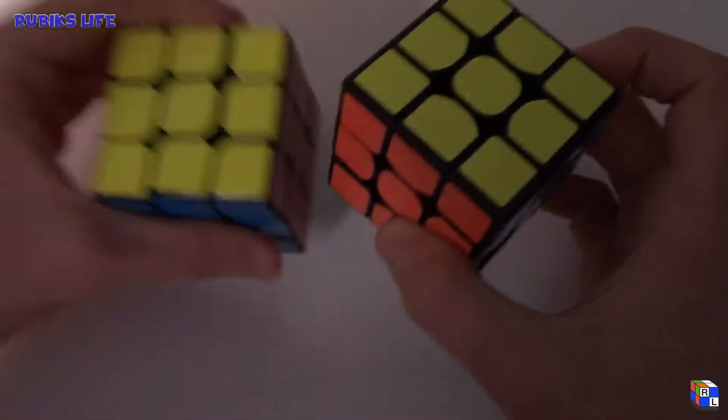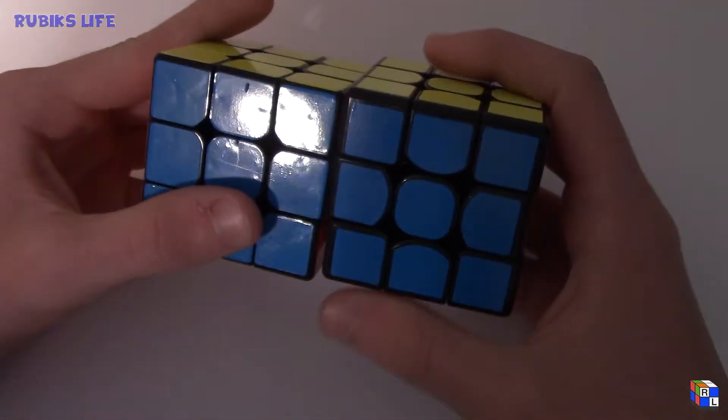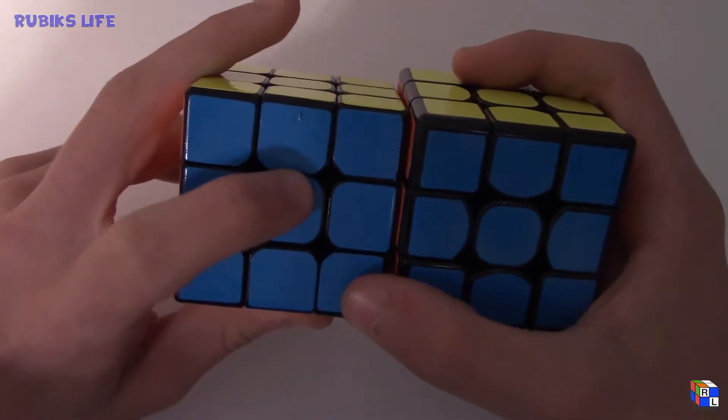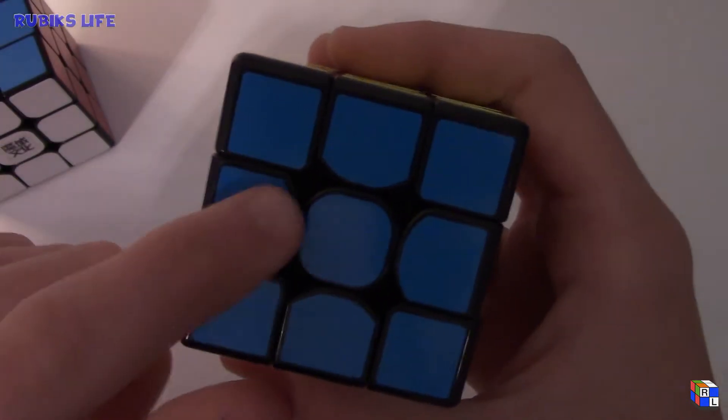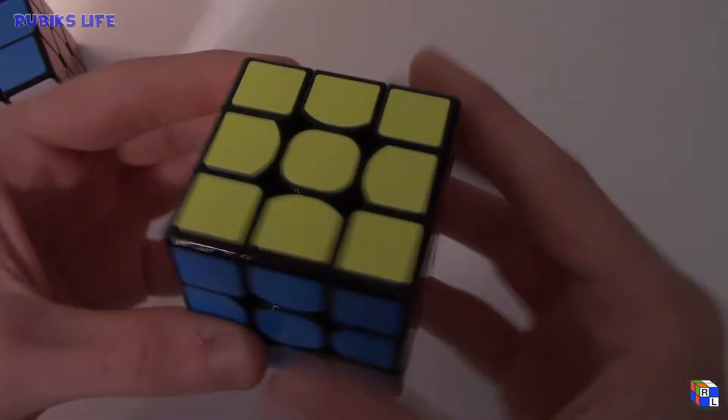I don't have squared off corners yet because my main is the Aolong V2 which has no squared off corners compared to the squared off corners of the Weilong.